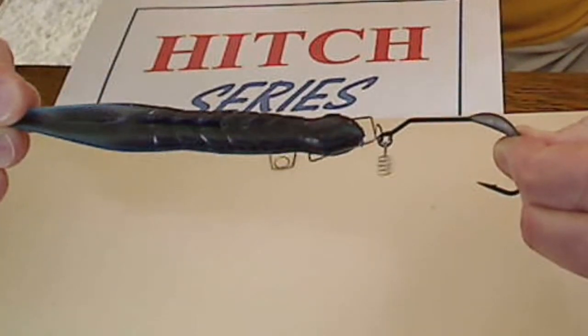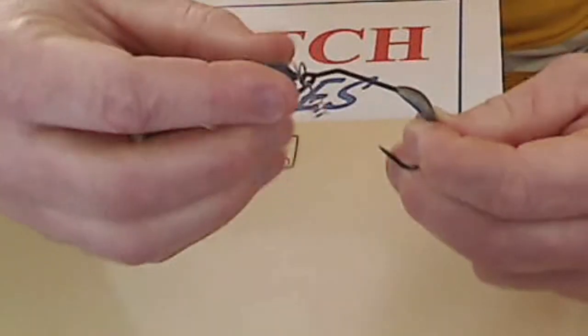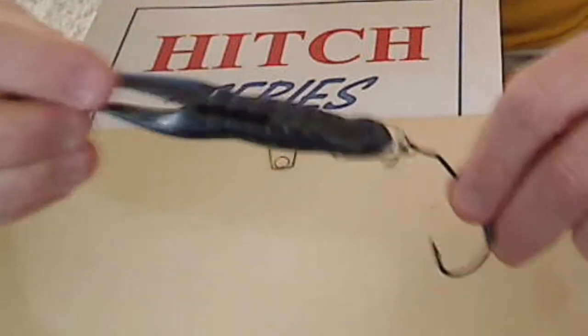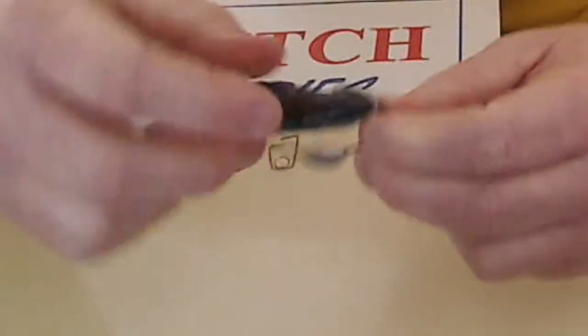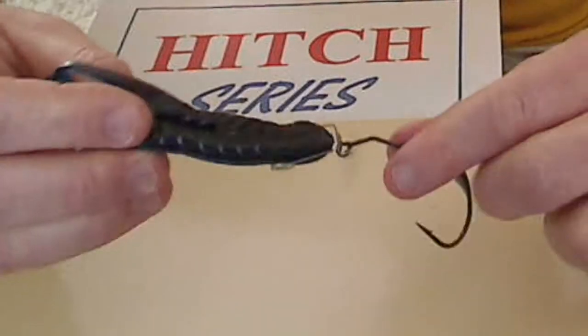Again, you can pretty much pull the legs off of this thing without it coming undone from your hook. So, whether you're using it with the corkscrew keeper or without the corkscrew keeper, the trailer hitch is going to let you get a lot longer life out of each and every one of these baits.